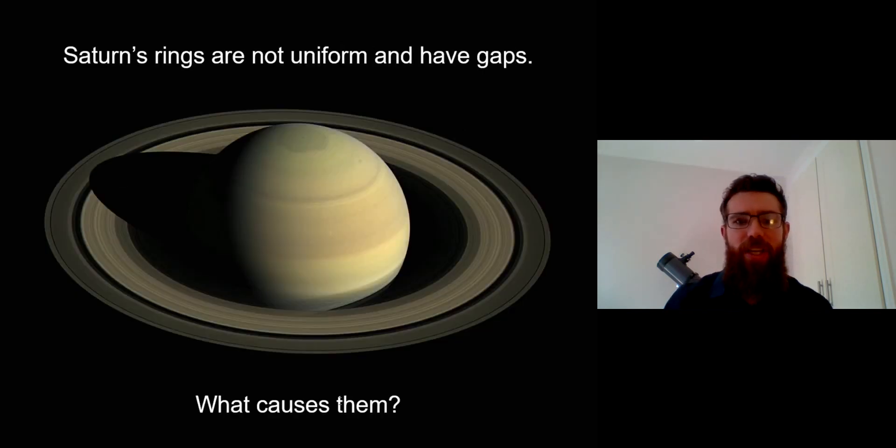If we look at Saturn and its ring system, even from Earth with a fairly small telescope, you can see that it's not uniform. There are gaps in it, and the Cassini division is probably the main one you can see right in the center, but there's also much finer scale gaps. So what is actually causing them?